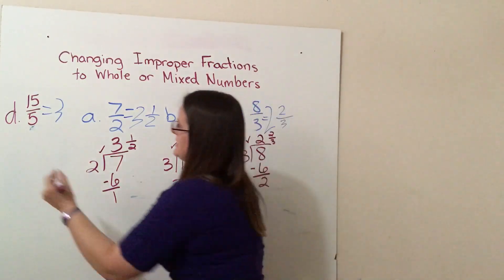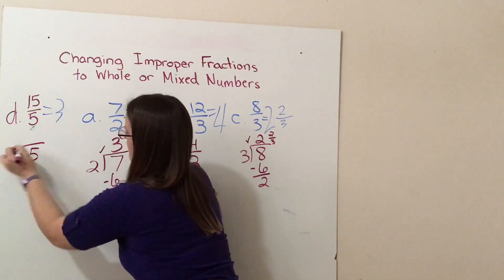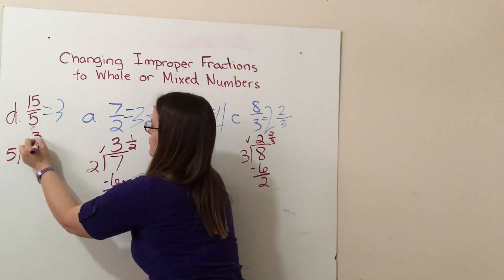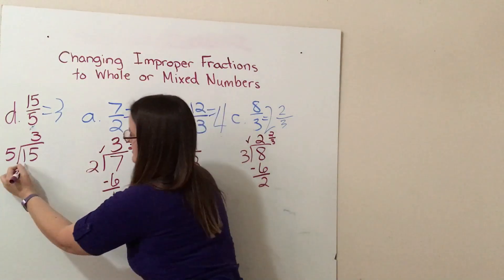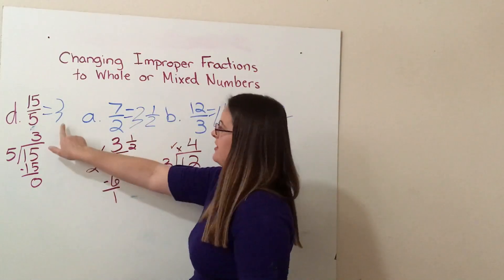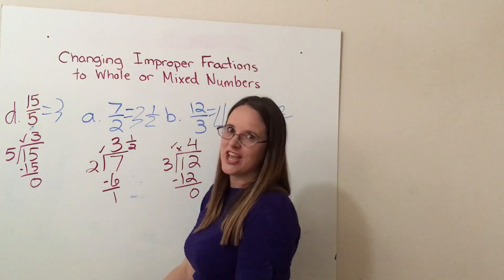And problem D over here, fifteen divided by five. Five goes into fifteen three times, three times five is fifteen. We subtract, we do not have a remainder. Nyla got three, I got three using division, check.